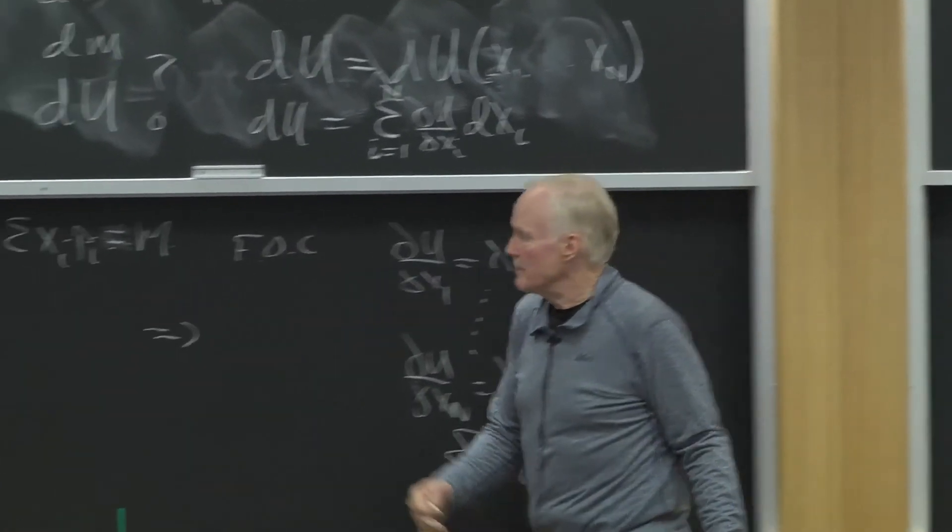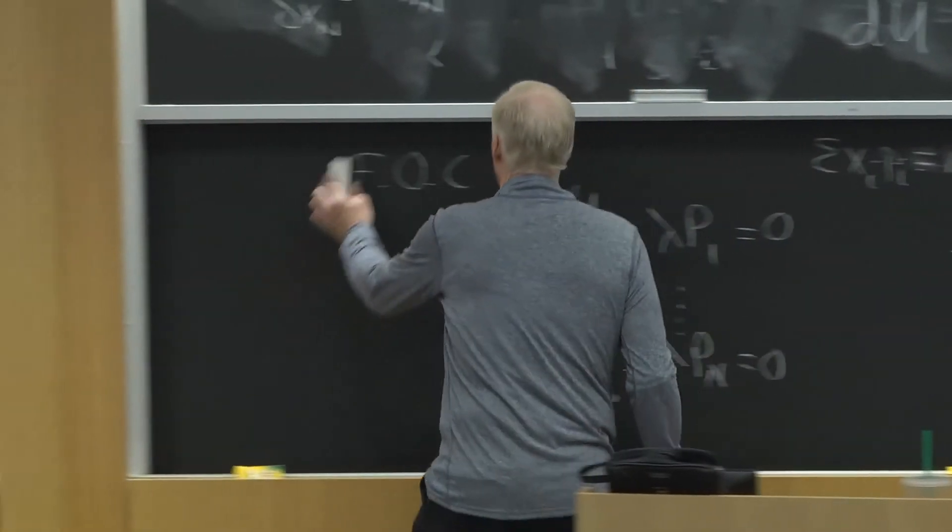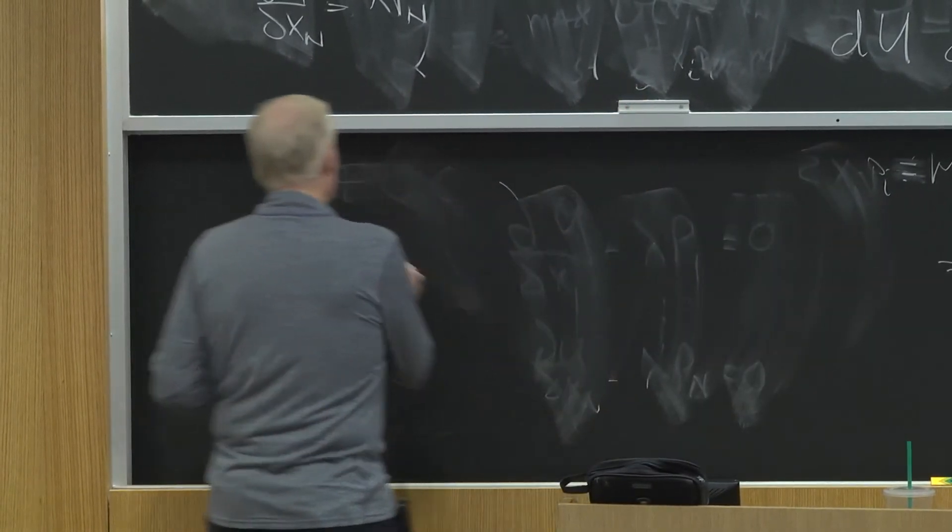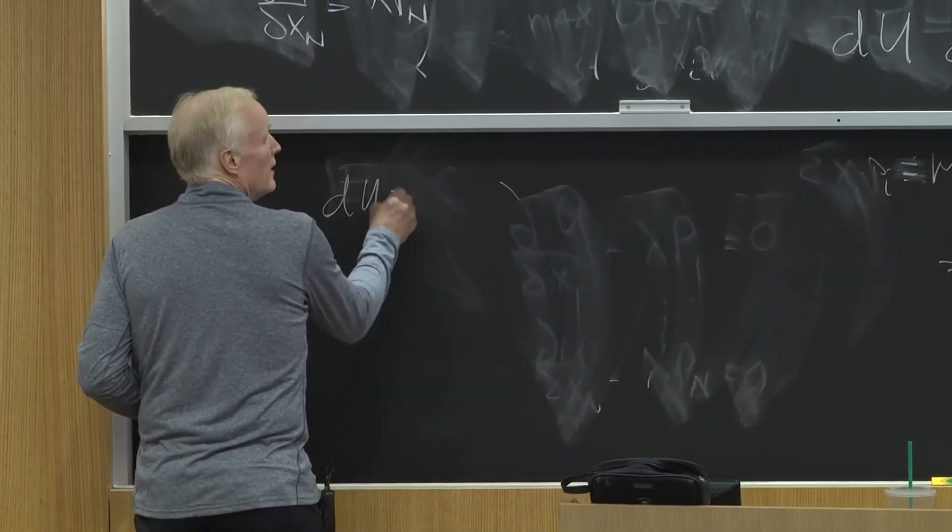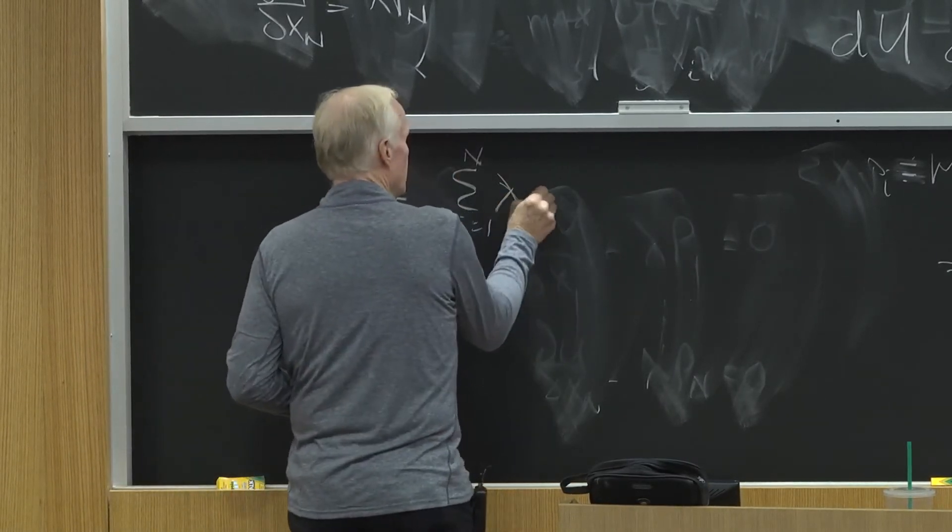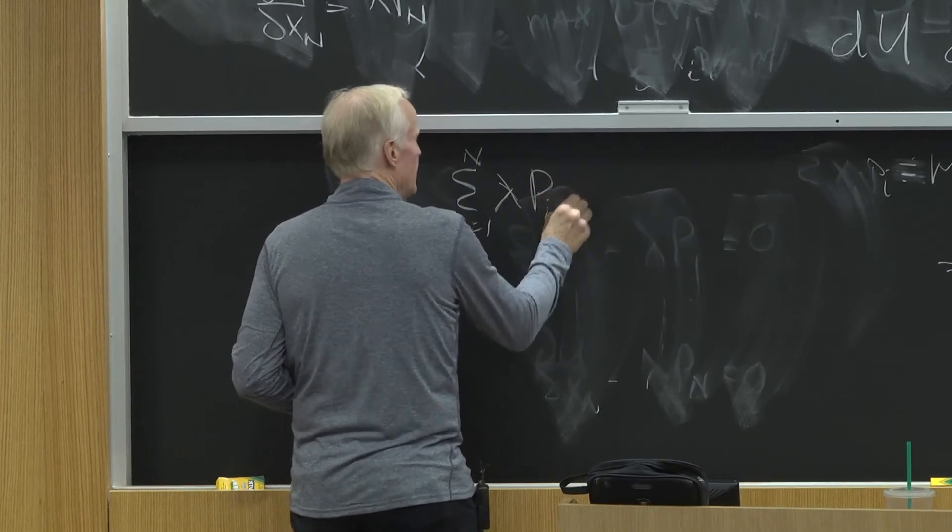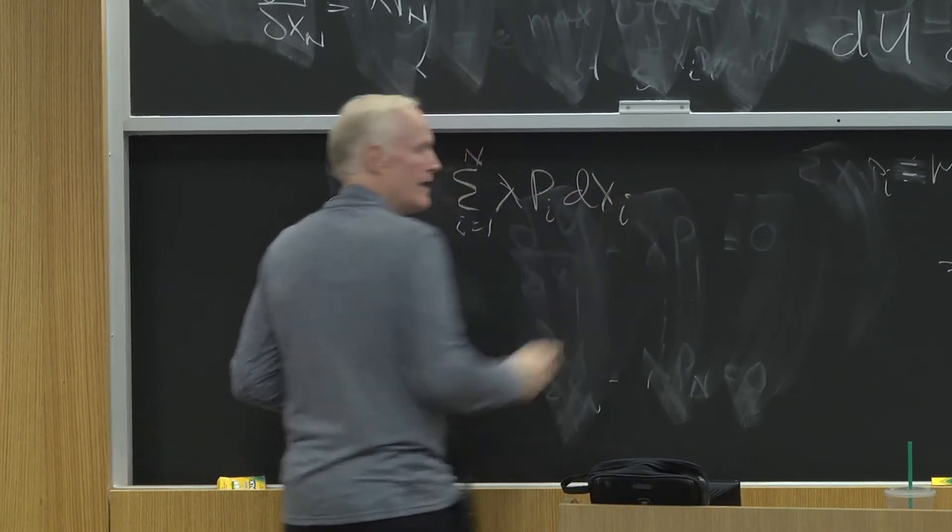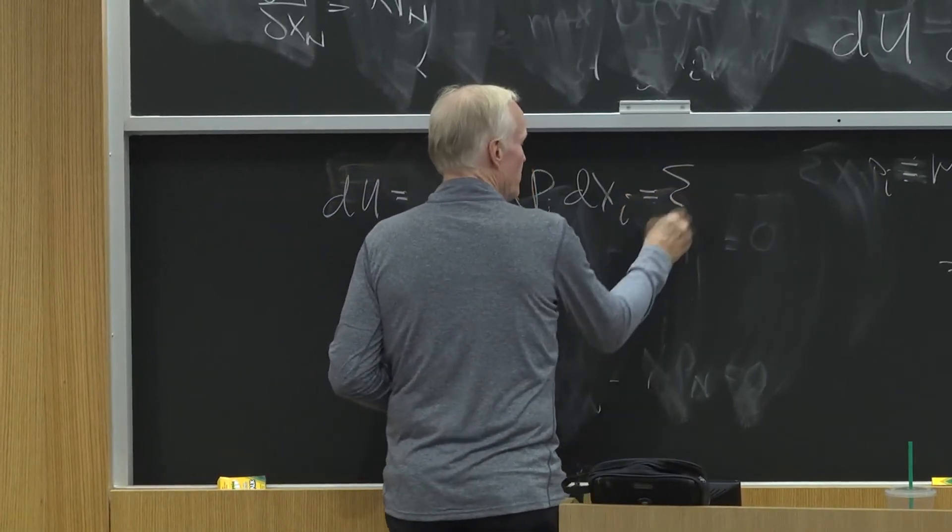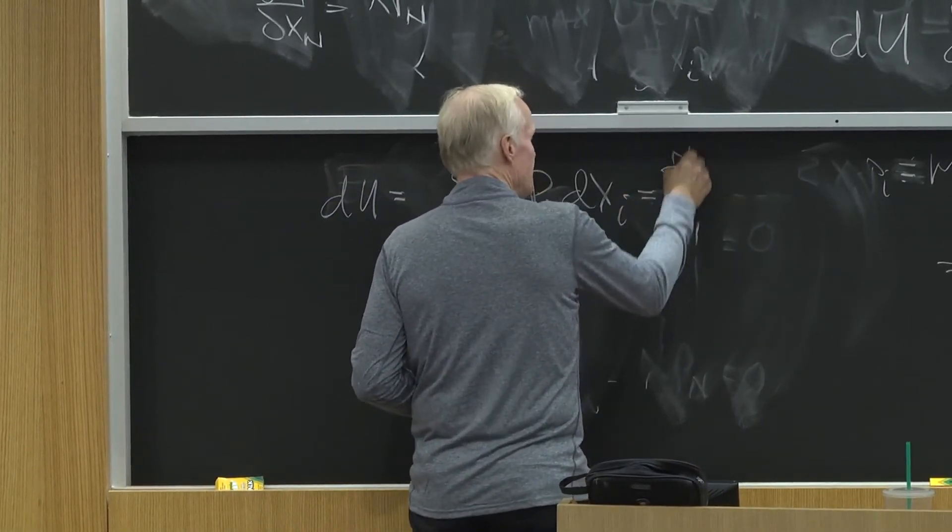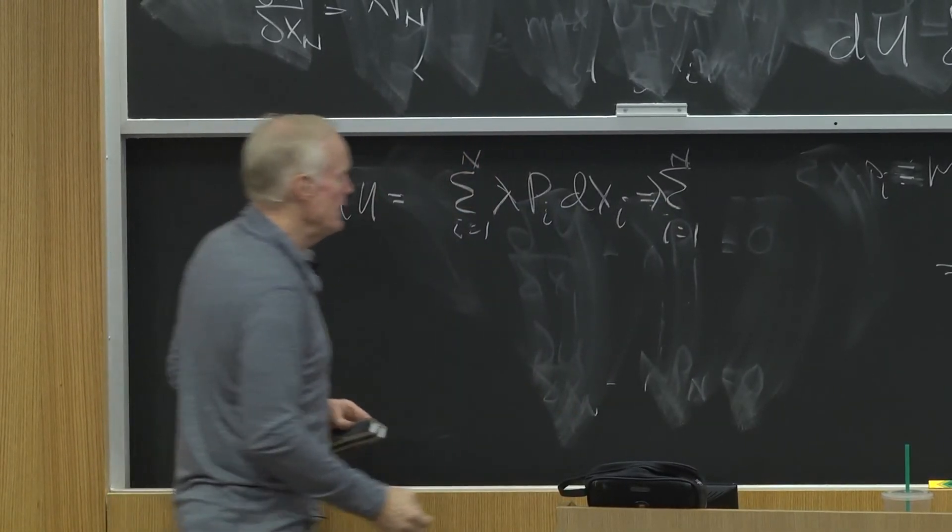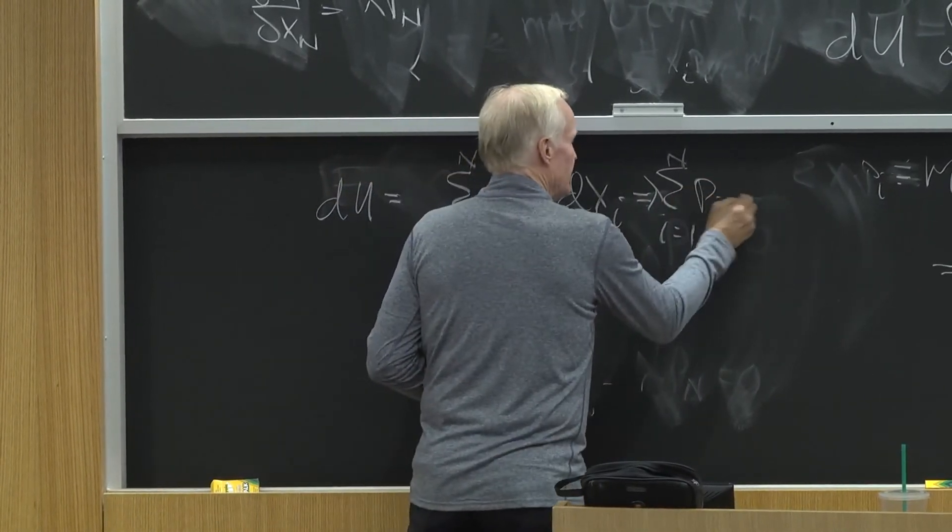But what's partial u partial xi? What is it? That's lambda pi. So, DU equals sum from i equals 1 to n of lambda pi dxi equals the sum from i equals 1 to n, with a lambda on the outside, because lambda doesn't depend on i, of pi dxi.